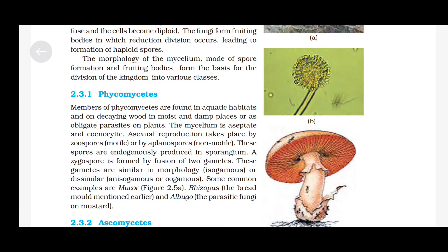Phycomycetes: Members are found in aquatic habitats and on decaying wood in moist and damp places, or as obligate parasites on plants. The mycelium is aseptate and coenocytic. Asexual reproduction takes place by zoospores (motile) or aplanospores (non-motile), endogenously produced in sporangia. A zygospore is formed by fusion of two gametes, which may be isogamous, anisogamous or oogamous. Some common examples are Mucor, Rhizopus (the bread mold) and Albugo (the parasitic fungi on mustard).